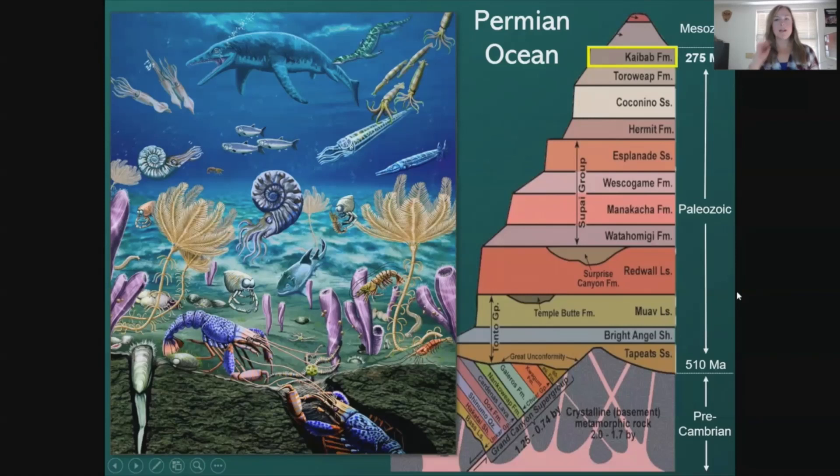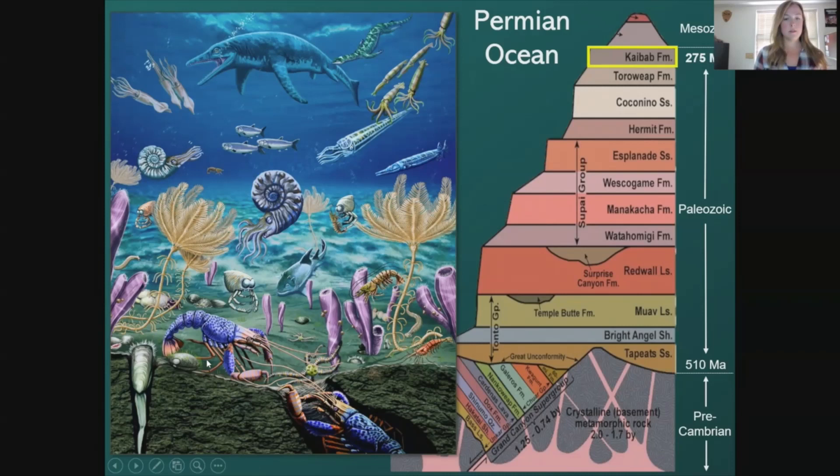Jumping into the Kaibab Formation — this is the rock formation that forms the rim of Grand Canyon and represents the Permian Ocean. In this ocean we have sharks, fish, cephalopods, even shrimp and crinoids — all kinds of different creatures. We're at about 280 to 275 million years at this point.